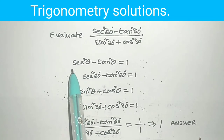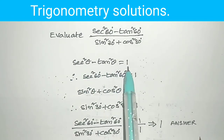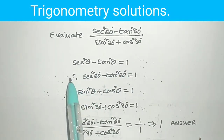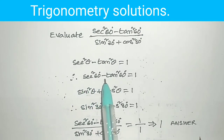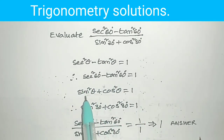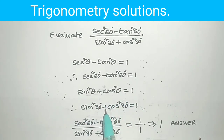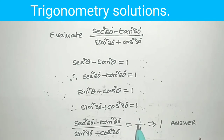Alternatively: secant squared theta minus tan squared theta is equal to 1, therefore secant squared 60 degrees minus tan squared 60 degrees is equal to 1. sin squared theta plus cos squared theta is equal to 1, therefore sin squared 30 degrees plus cos squared 30 degrees is equal to 1. Numerator is 1 and denominator is also 1, so 1 by 1 is 1.